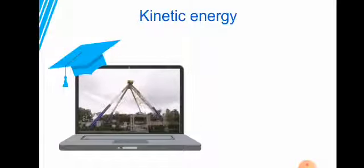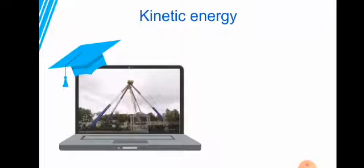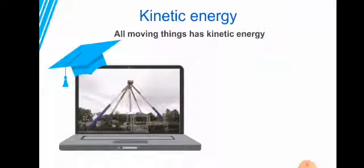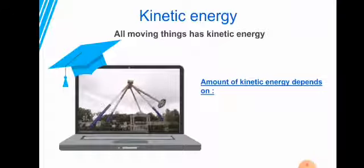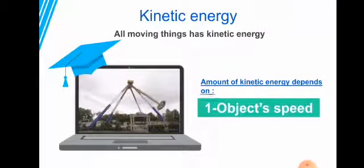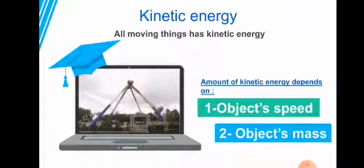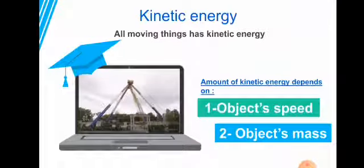Now let's talk about kinetic energy. Kinetic energy is the energy of motion — any moving object has kinetic energy. For example, this swinging swing has kinetic energy. Kinetic energy depends on two things: the object's speed and the object's mass.